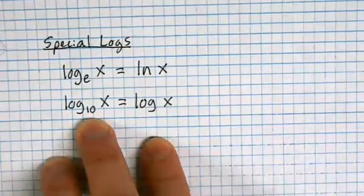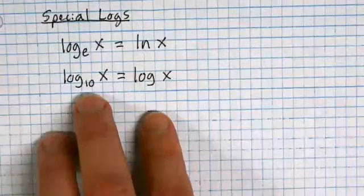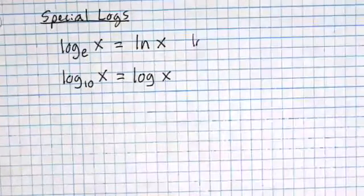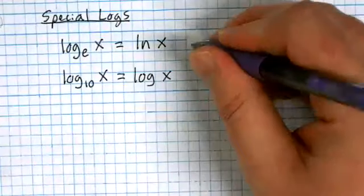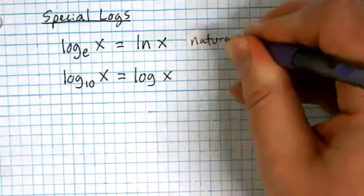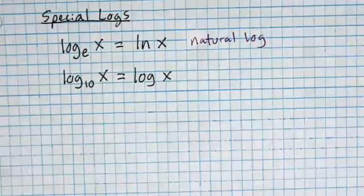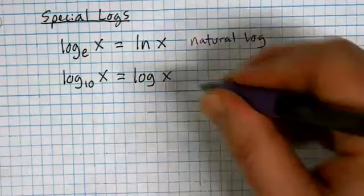Anyway, we do base 10 — we think it's because we have 10 fingers. Let's write down the names of these special logs: this is called the natural log, and this one is called the common log.